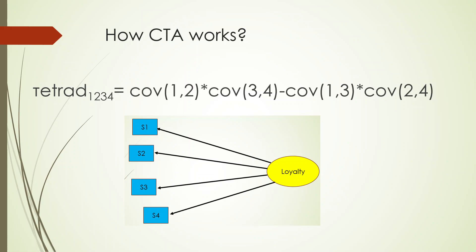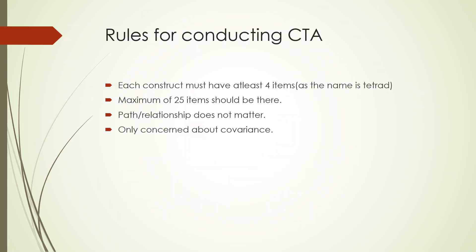The concept works as follows: if loyalty is a reflective construct, it is bound to have high correlation among indicators, and therefore the tetrad value will be equal to zero. But if it is formative, the tetrad will be something different and higher than zero. The entire concept is based on correlation, and on that basis we evaluate whether a construct is reflective or formative.